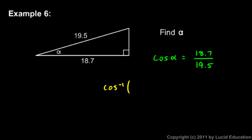So the left side would then look like this: the inverse cosine of this right here, cosine alpha. So there, I just took the inverse cosine of the left side. That equals the inverse cosine of the right side, 18.7 over 19.5.